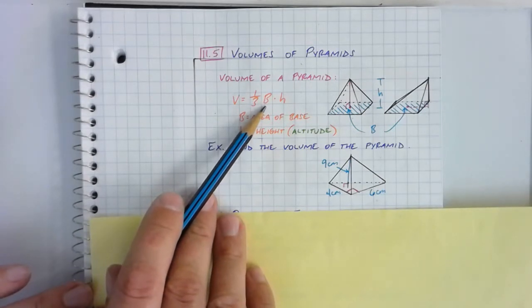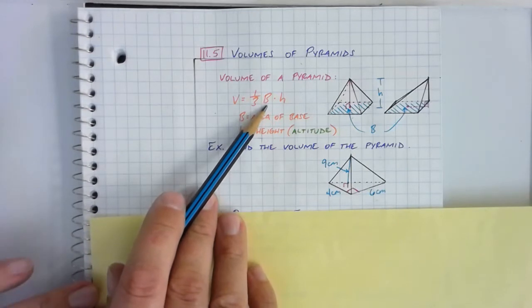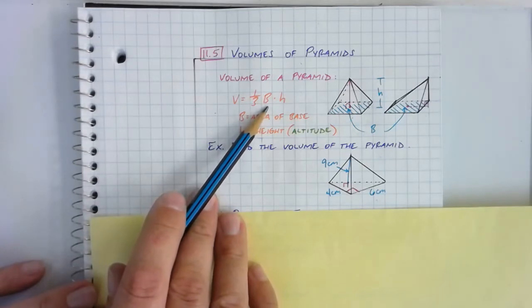Triangles will be one-half base times height for that shape. Rectangles will be length times width. Squares would be that side length squared. Trapezoids, one-half base one plus base two times the width. And then you get into the complicated polygons, like pentagons, hexagons, and stuff, where you have one-half times apothem length times number of sides times side length, that sort of thing.